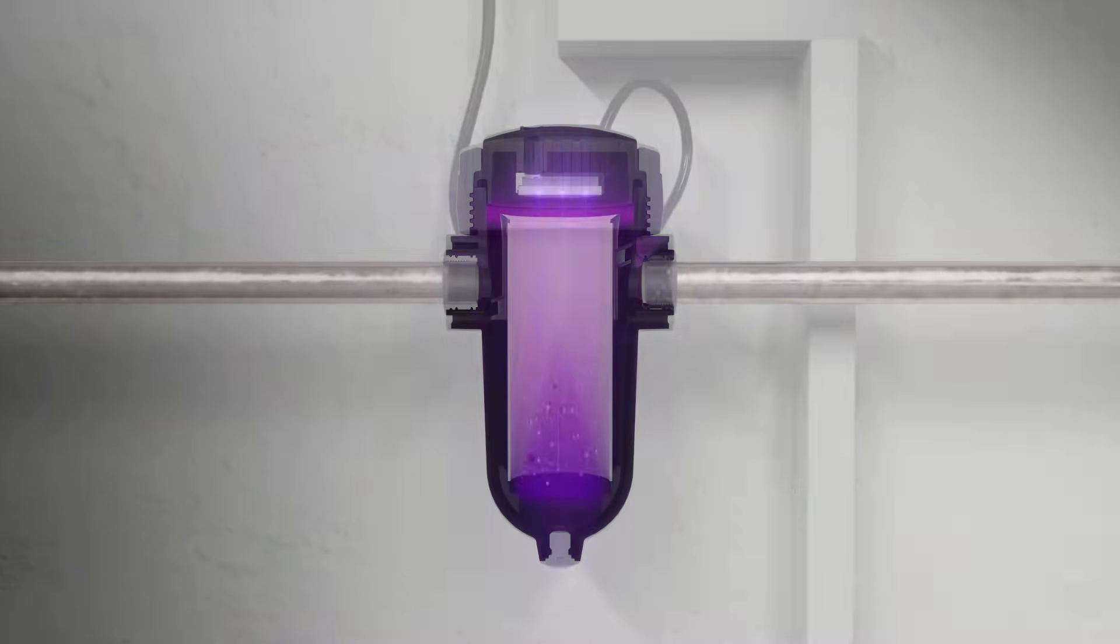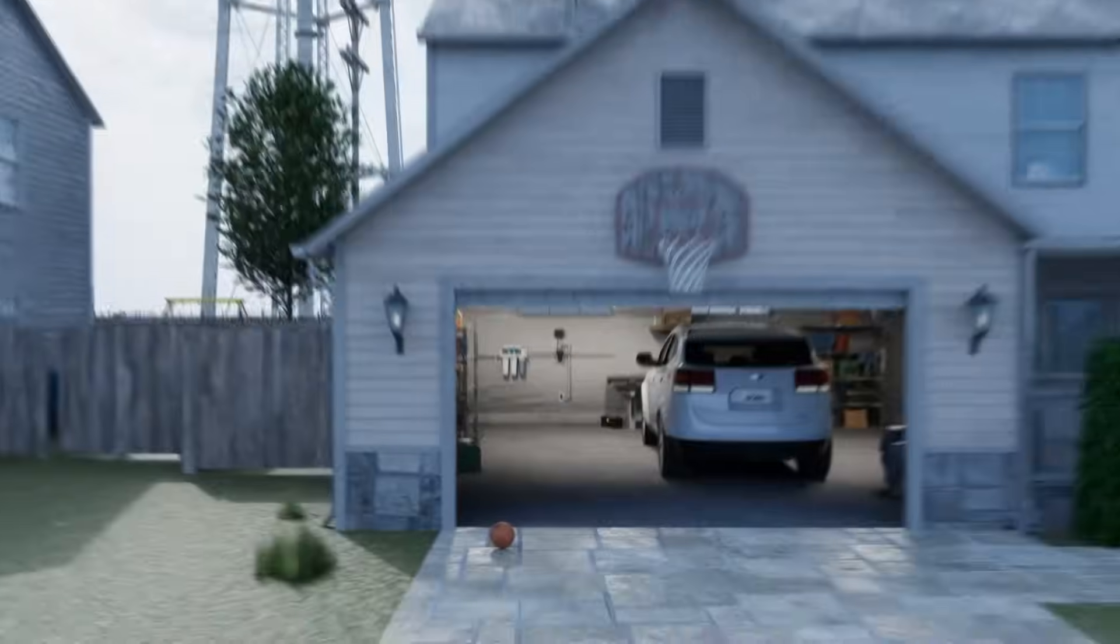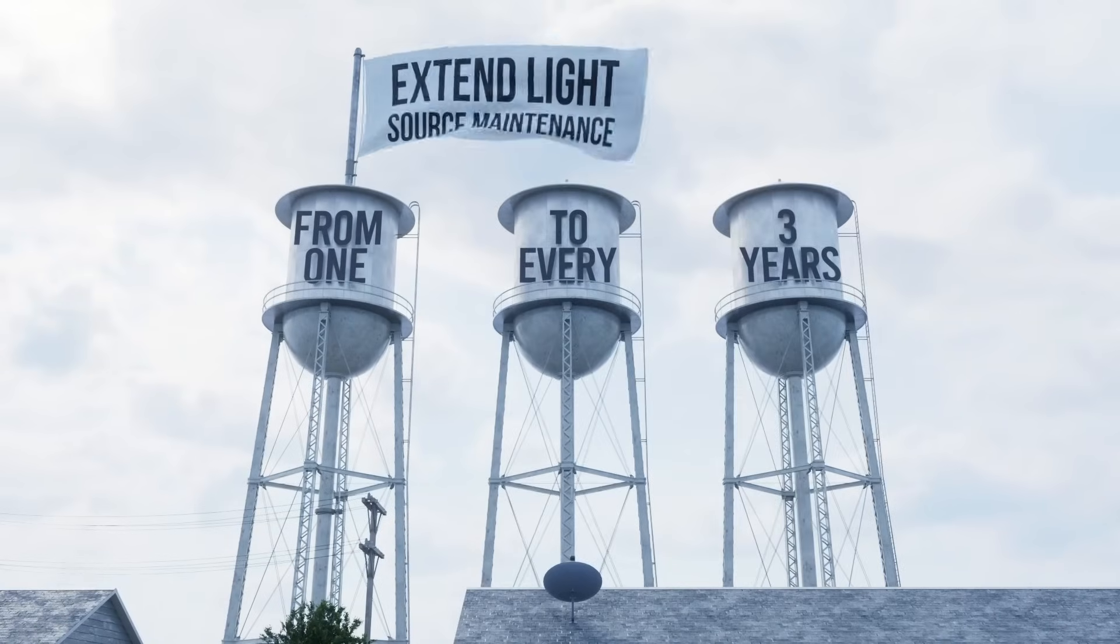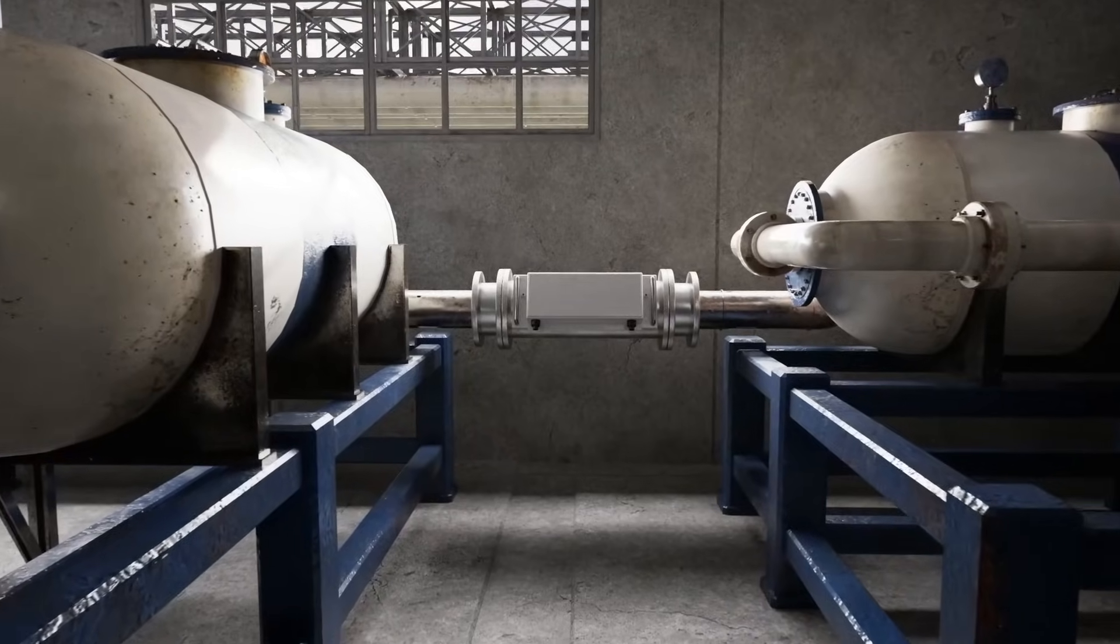UVC LEDs can extend the light source replacement cycle from annually to every three years. They also reduce the risk of needing unplanned system maintenance.